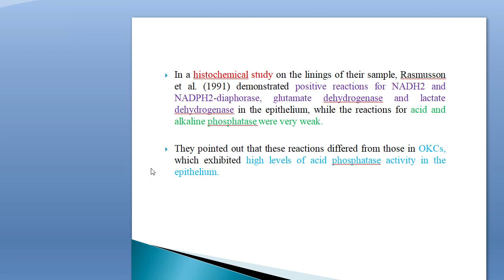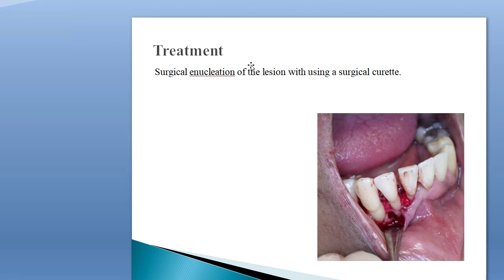Histochemical studies by Ramassan and Itchel demonstrated positive reactions for NADH2 and NADPH2 diaphorases, glutamate dehydrogenase, and lactate dehydrogenase in the epithelium, while the reactions for acid and alkaline phosphatase are very weak. Acid phosphatase participates in osteoclastic activity and alkaline phosphatase shows osteoplastic and bone formation activity — both show very weak reactions in the lateral periodontal cyst, whereas in odontogenic keratocyst, acid phosphatase activity is very high.